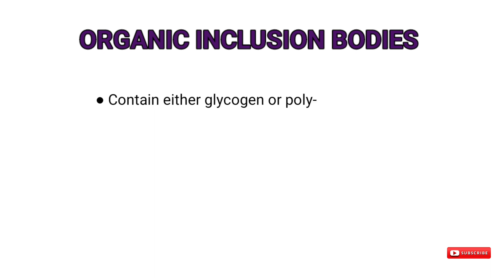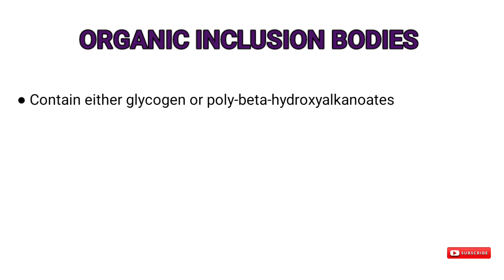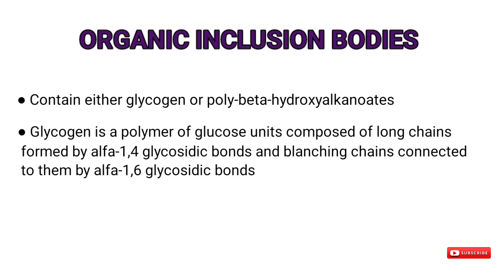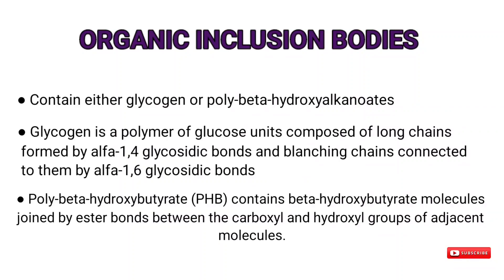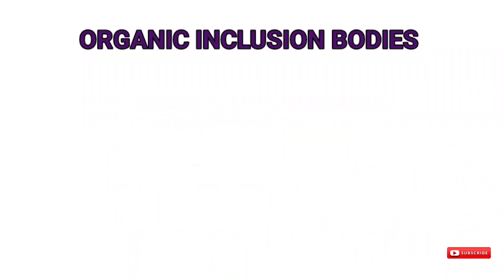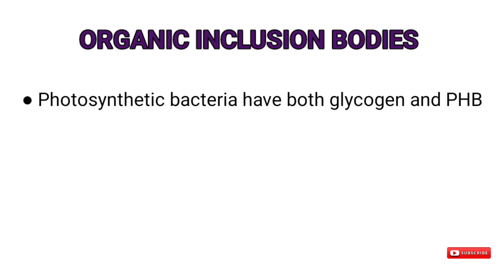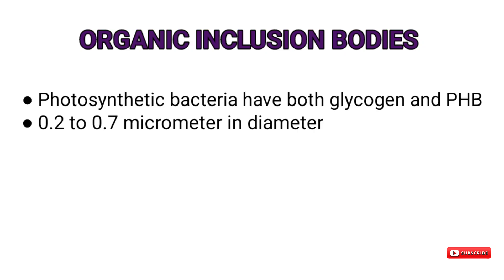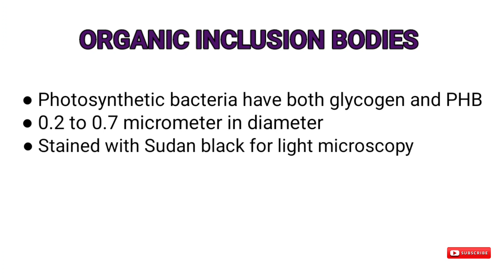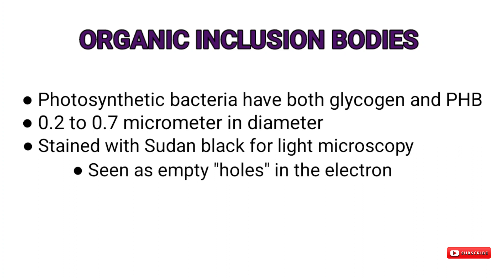Organic inclusion bodies usually contain either glycogen or poly-beta-hydroxyalkanoates, for example poly-beta-hydroxybutyrate (PHB). Glycogen is a polymer of glucose units composed of long chains formed by alpha-1,4 glycosidic bonds and branching chains connected by alpha-1,6 glycosidic bonds. PHB contains poly-hydroxybutyrate molecules joined by ester bonds between the carboxyl and hydroxyl groups of adjacent molecules. Usually only one of these polymers is found in a species, but some photosynthetic bacteria have both. PHB accumulates in distinct bodies around 0.2 to 0.7 micrometers in diameter, readily stained with Sudan black for light microscopy.